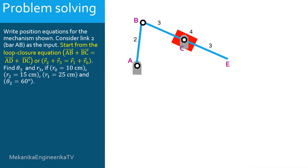This mechanism is an inverted slider crank. It is built of three bars: the bar AB, link 2; the bar BE, link 3; and the bar AC, link 1, which is here the ground. The fourth link here is the slider, which rotates about C.